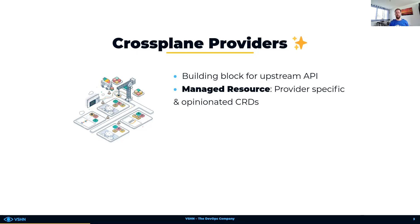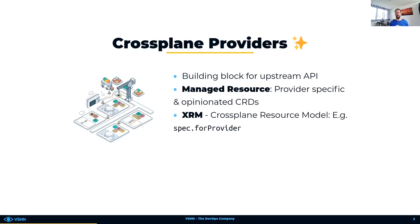Such provider-specific resources are called managed resources. From a user's perspective, they are just standard Kubernetes custom resources. But with the opinionated Crossplane resource model, each of these custom resources looks similar. For example, each custom resource has a field called spec.forProvider, which contains the detailed configuration of the upstream resource. Most of the time it reflects all possible options which are available in the third-party API, allowing for full flexibility per supported API.